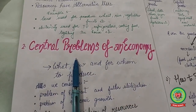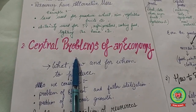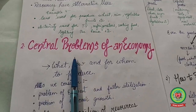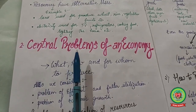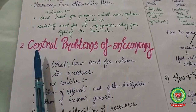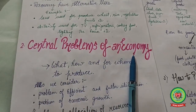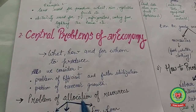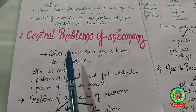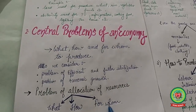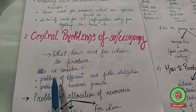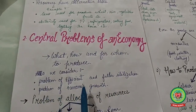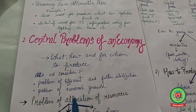Regarding central problems of an economy: resources available to an economy are scarce, and scarcity of resources gives rise to the problem of choice. Every economy has to face problems relating to choice, which are the central problems. These include the problem of allocation of resources — what, how, and for whom to produce — efficient utilization, and economic growth.